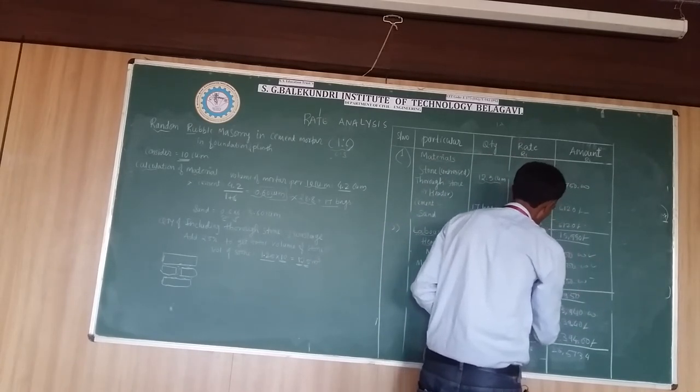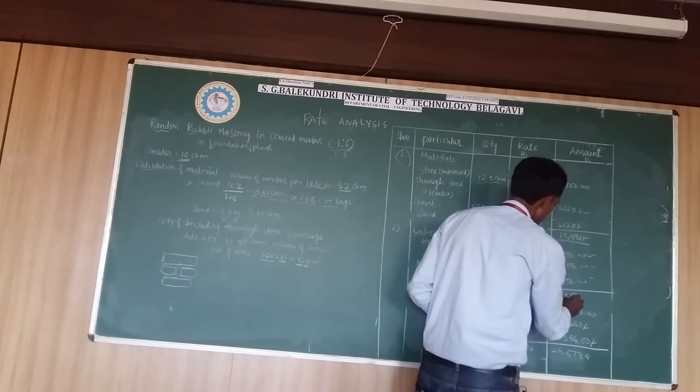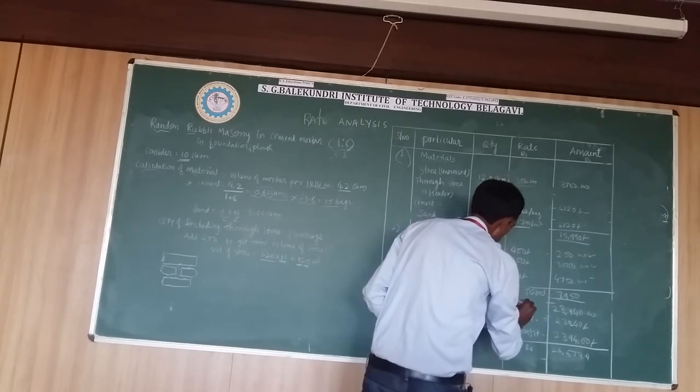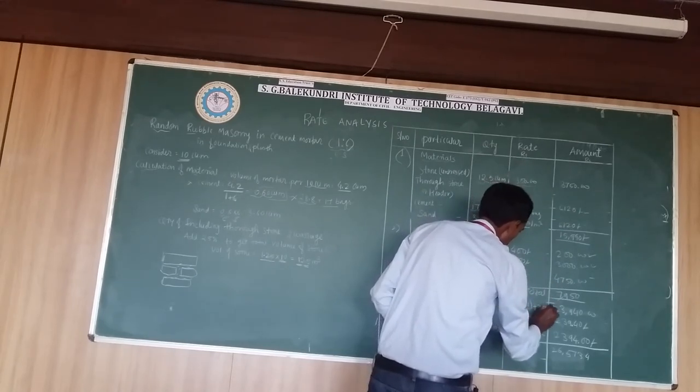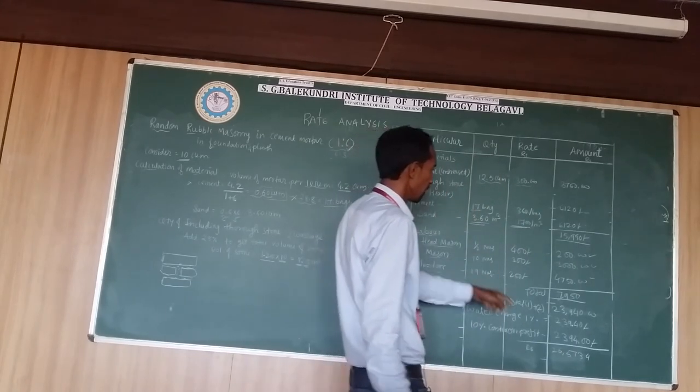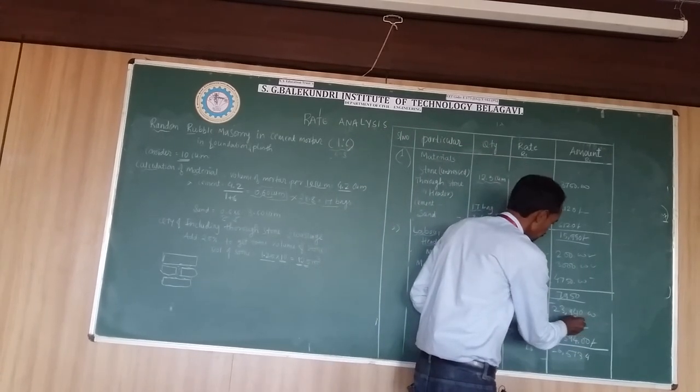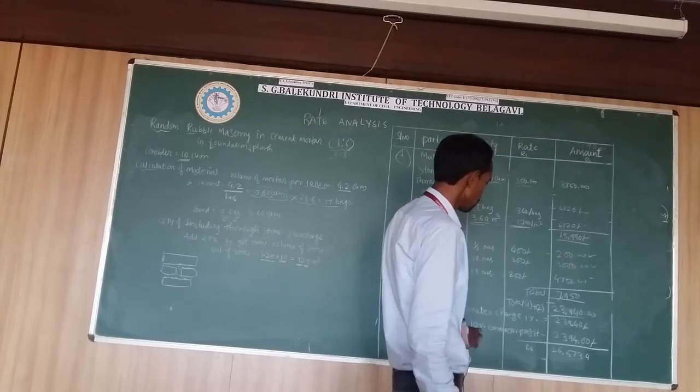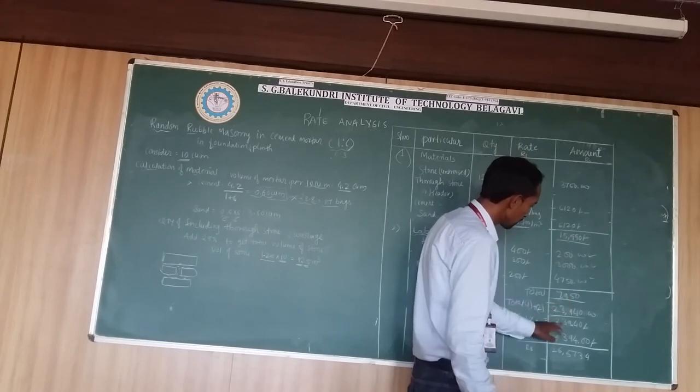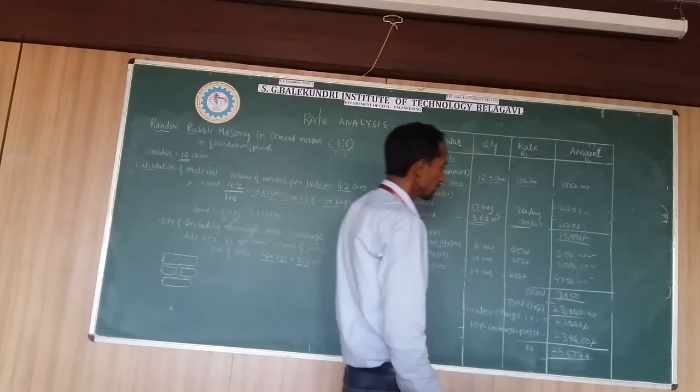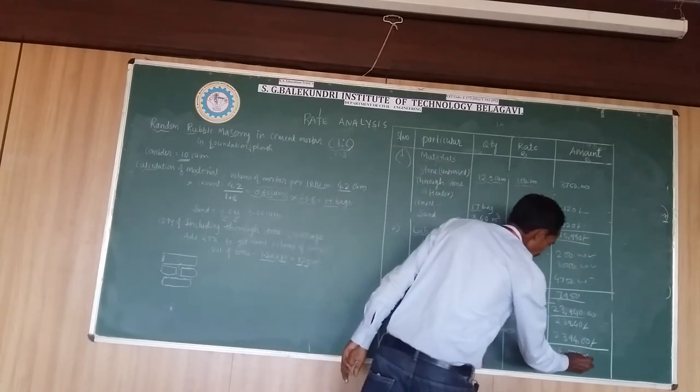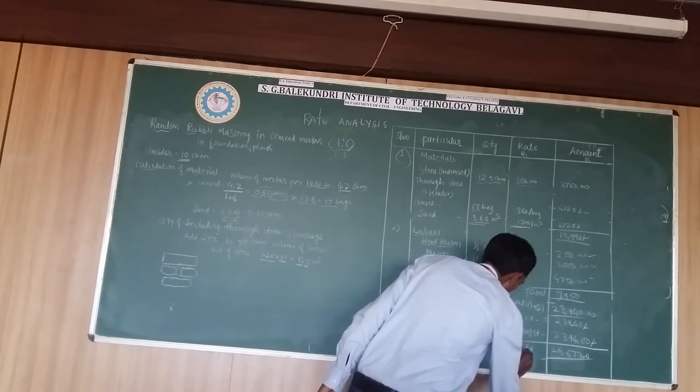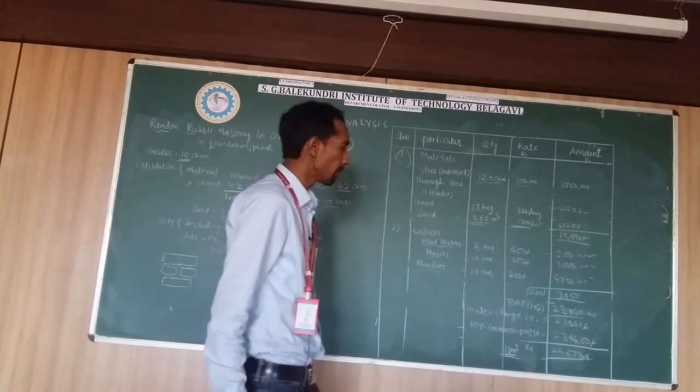Total amount for labor is 7,950 rupees. In this, the total of labor and the material, we have 23,940 rupees. In that we are going to add the water charges of 1% and 10% of contractor profit. By adding all those amounts, you will get 26,573 rupees. This is for 10 meter cube of random rubble masonry.